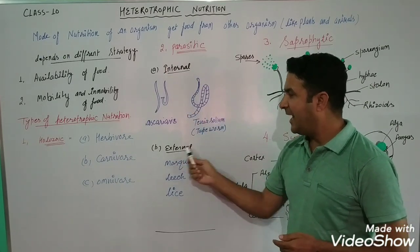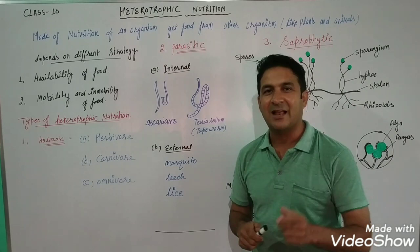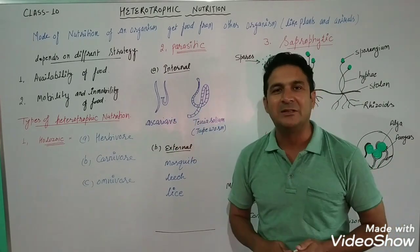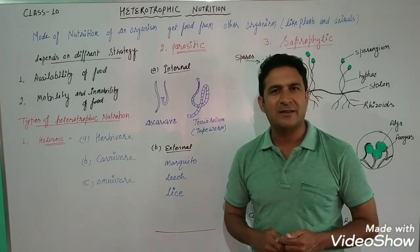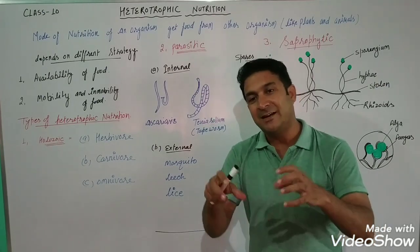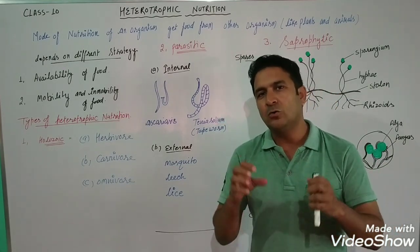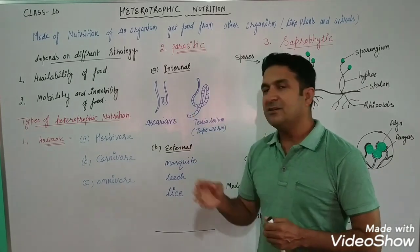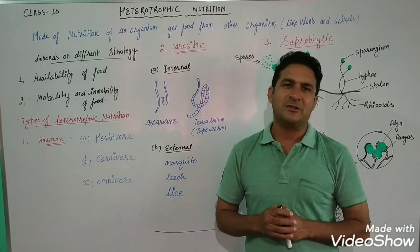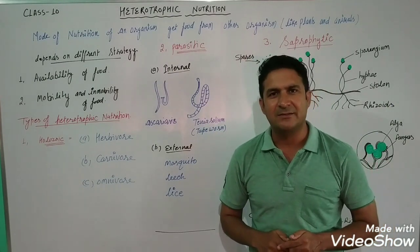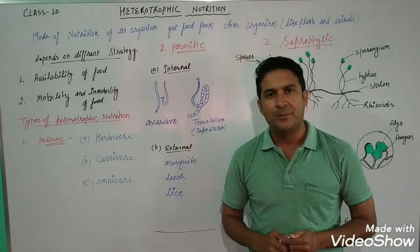The second type is parasitic mode of nutrition. There are two types: internal parasites and external parasites. In your class 9 biology syllabus — classification of living organisms — these were covered: Aschelminthes (roundworm, ascariasis) and Platyhelminthes (tapeworm, Taenia solium) are internal parasites. They are present inside the gut of animals and absorb already-digested food from there. They don't have special organs to chew food or a specialized alimentary canal.